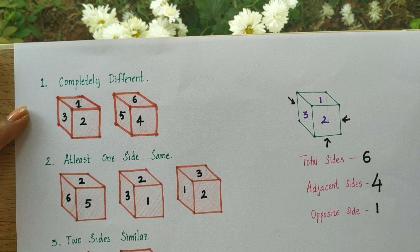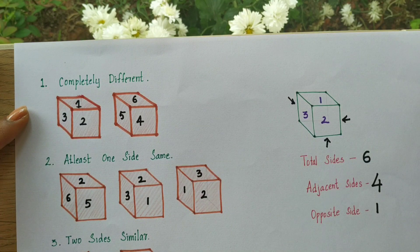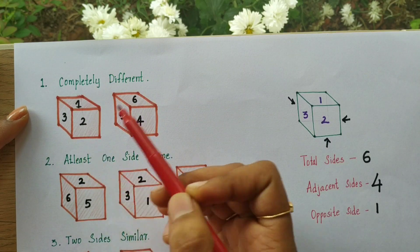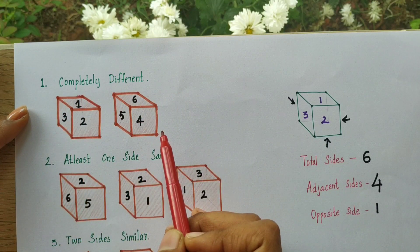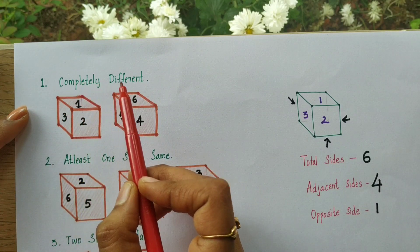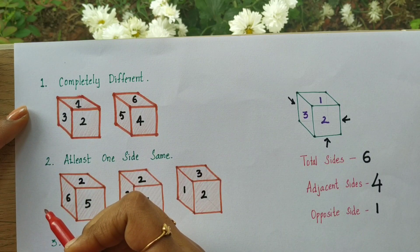In order to find the opposite side of a cube, the question will give two types of cubes and ask you to find the opposite side of a particular number, like four, or find other numbers. There are three different tricks. The first trick: in the question they will give two types of dice with numbers on them. If all the numbers are completely different, you apply this trick.